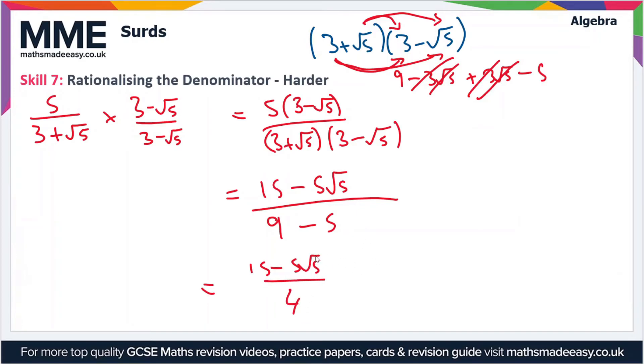And we're almost there. But we can take out a factor from the top here of 5. So we've got 5 lots of 3 minus root 5 over 4. So that's the simplified expression. And obviously we've removed the surds from the denominator. So we've rationalized the denominator of this expression.